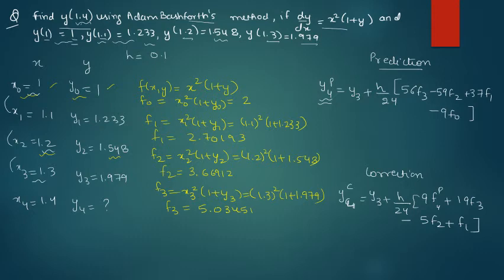Then when you need to find out f4, then you will use this. For f4 you firstly need to find out y4p. So y4 prediction will be y3, so y3 is what? 1.979.